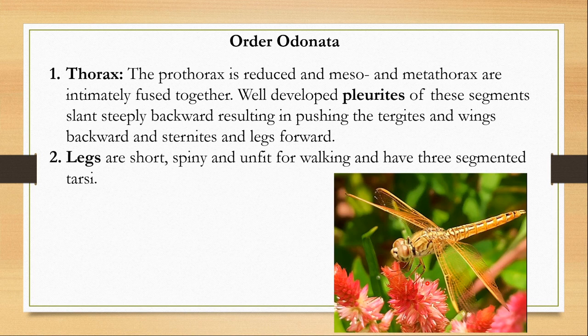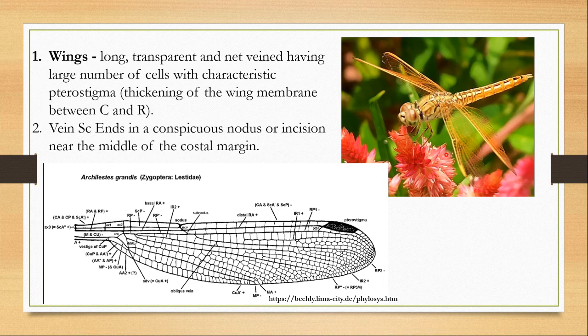The legs are short, spiny, and unfit for walking. Their main mode of locomotion is flying. The legs have a three-segmented tarsus and are only used for holding onto a substrate when they sit — they do not walk like cockroaches or other insects; they just fly around.